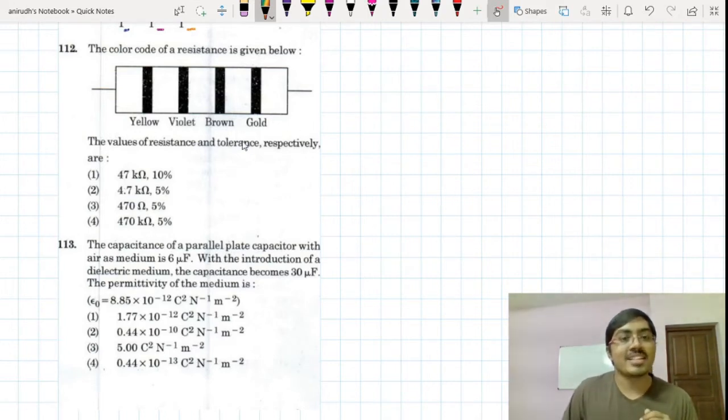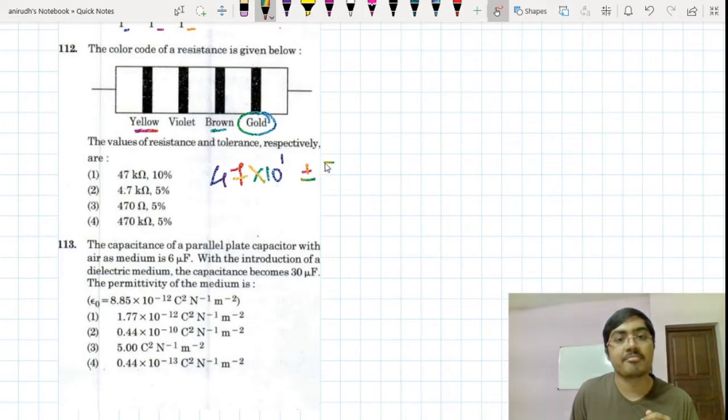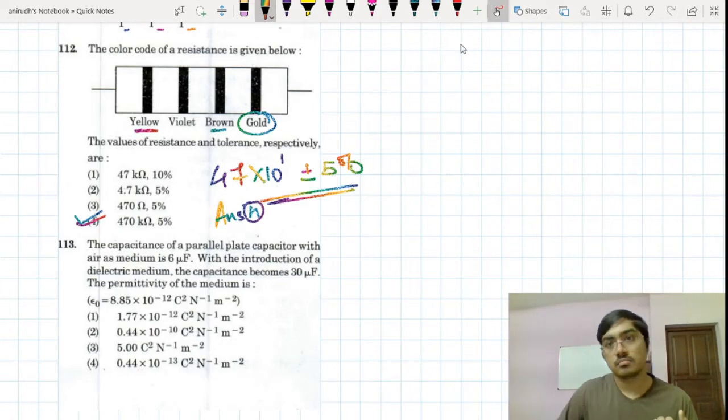So this is 4, violet is 7 into 10 to the power brown is 1, and plus or minus gold is actually 5 percent. So it's a direct question: 470 kilohm 5 percent. So my answer for this question is option 4.